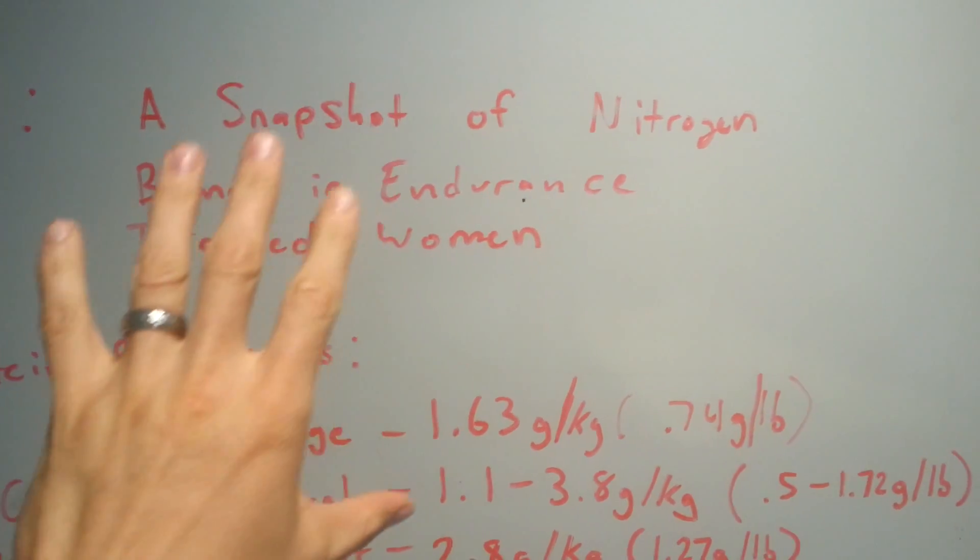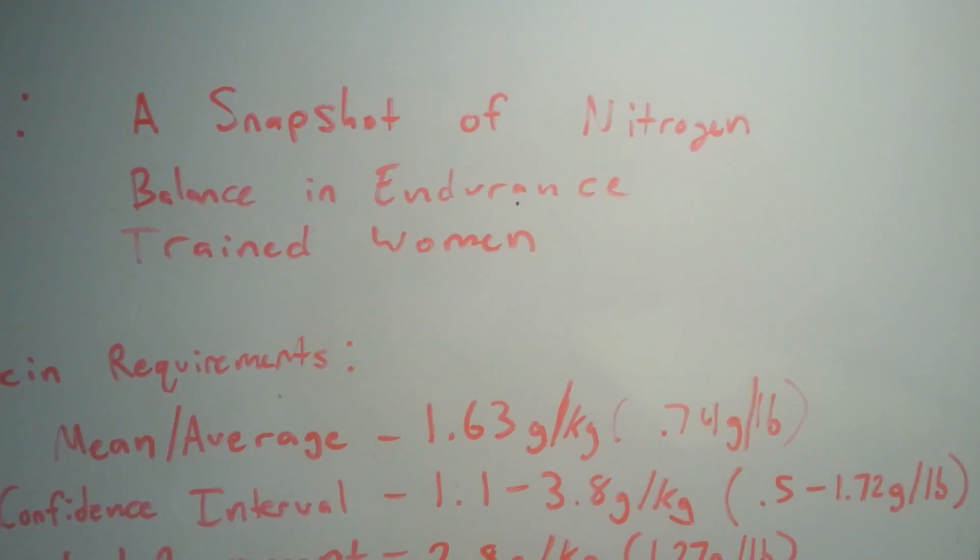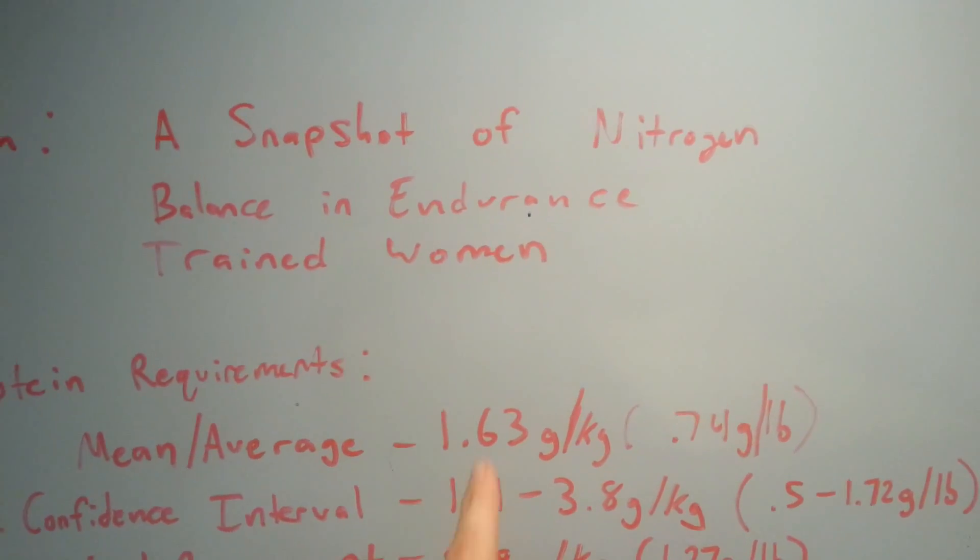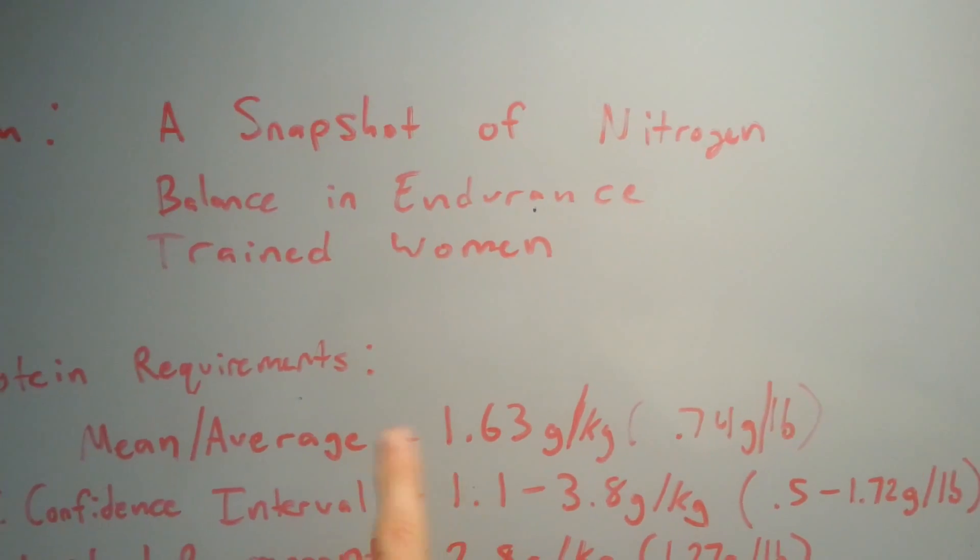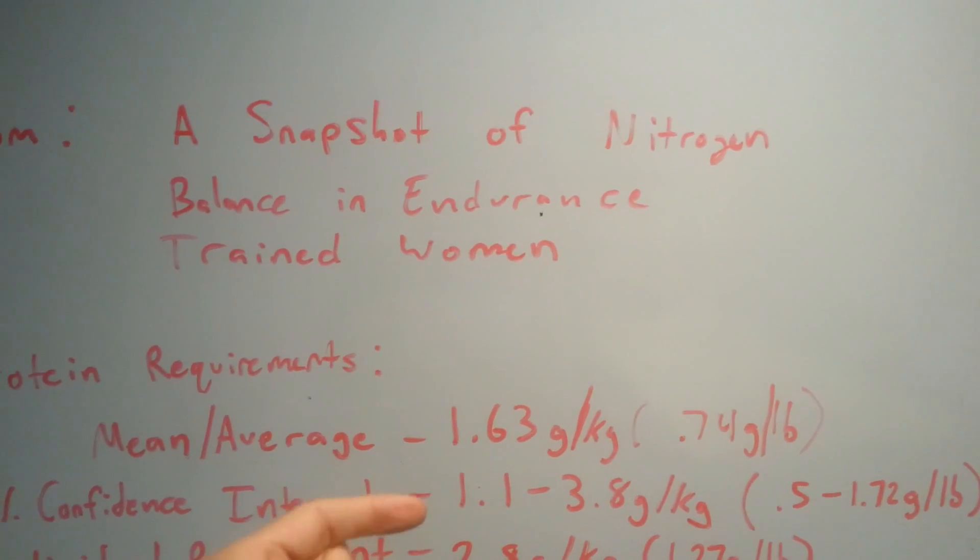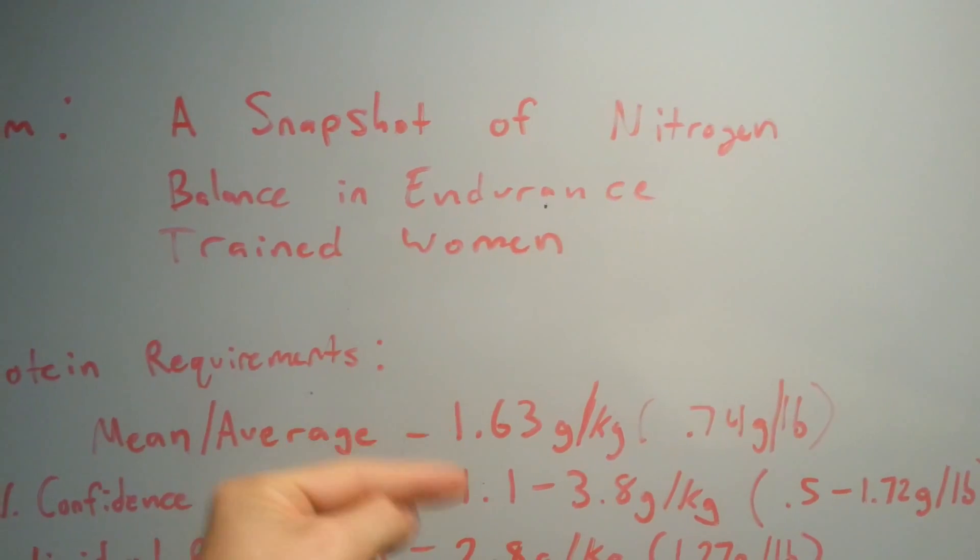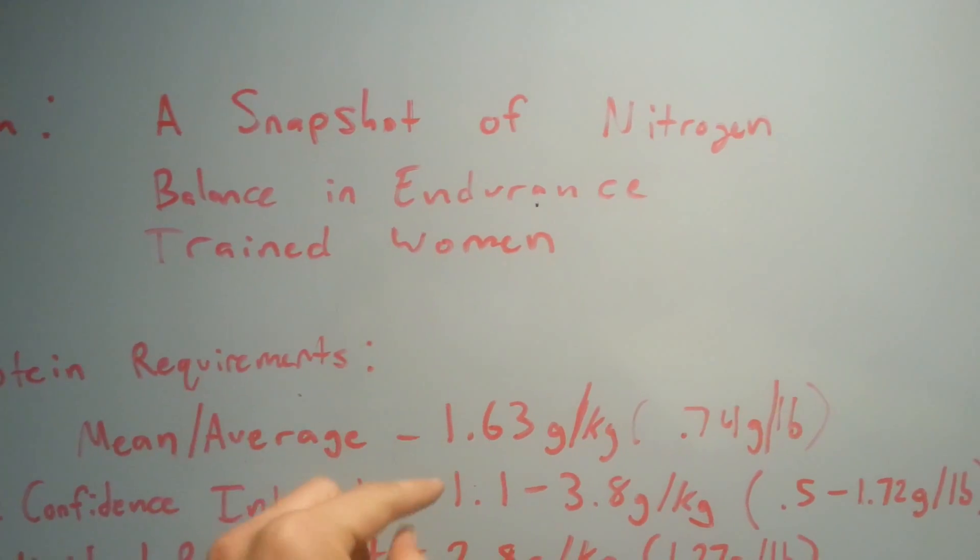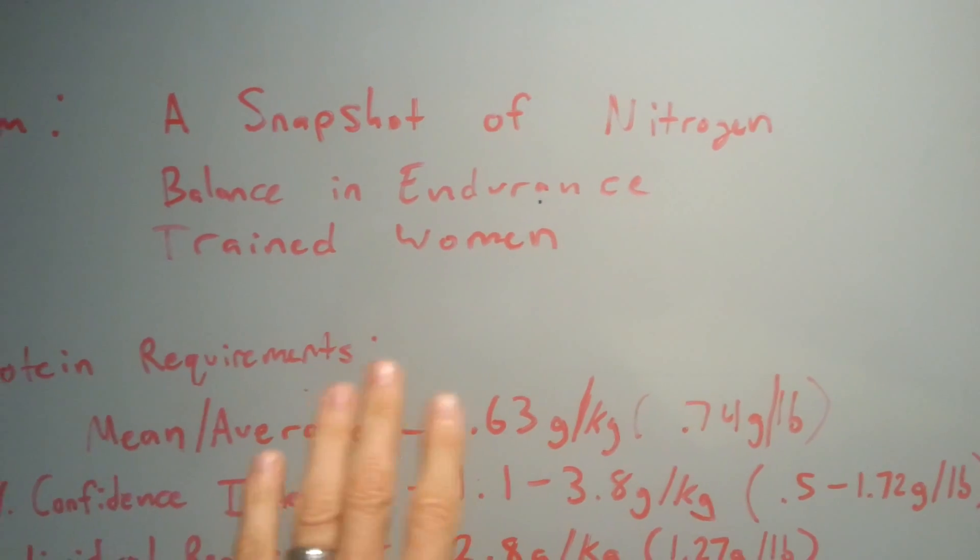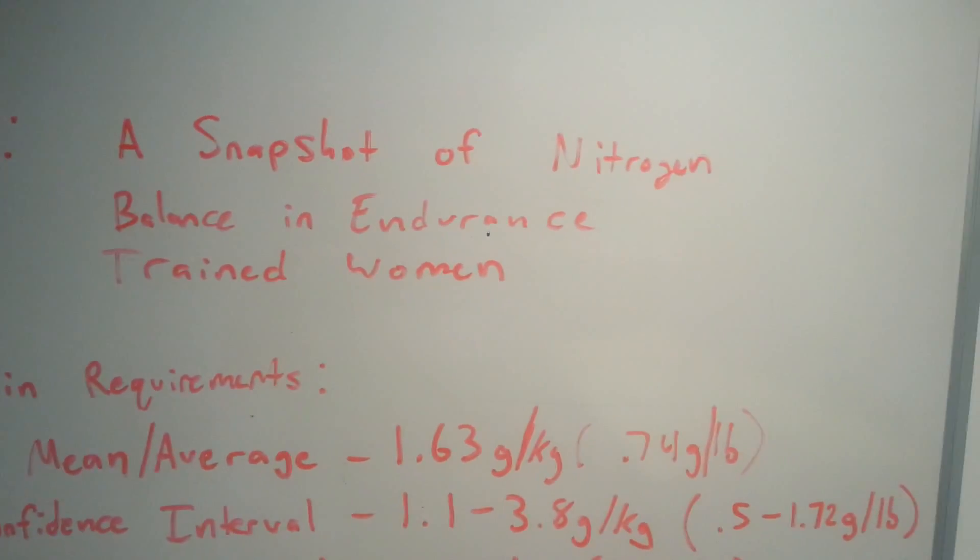What this does NOT mean - and it's often misunderstood to mean - is that the individual's requirement falls between here. That means you grab any random person off the planet who's an endurance-trained woman and their protein requirement will fall between here and here. That's not actually what this is. This is the value of the true population that this is meant to represent - their mean.